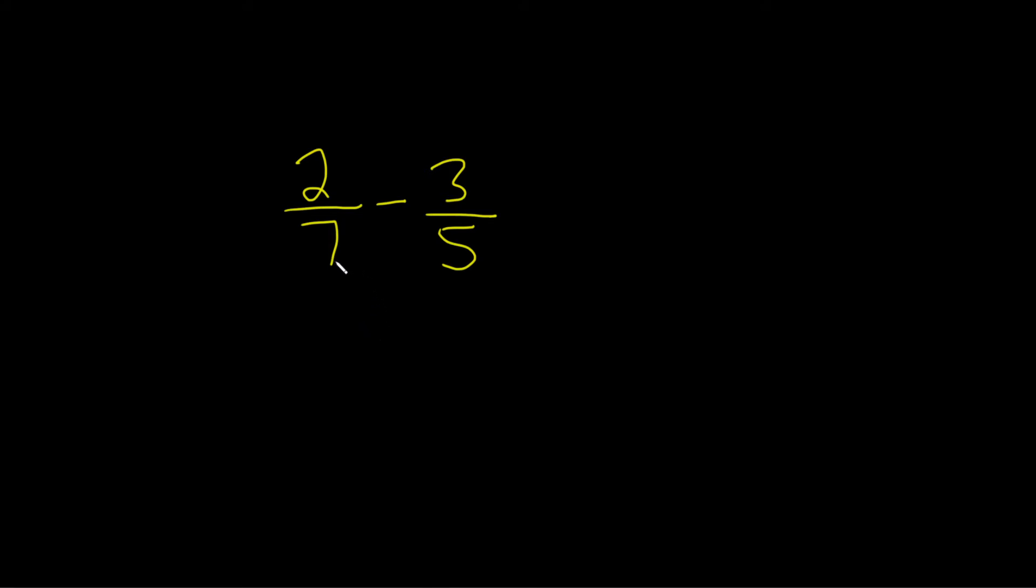We can do that simply by multiplying the 7 and the 5. So 7 times 5 is equal to 35. So that's our common denominator.